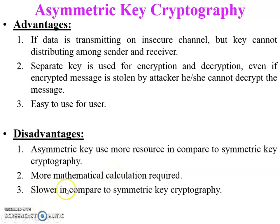Famous examples of asymmetric key cryptography are the RSA algorithm (Rivest, Shamir, and Adleman) and the Diffie-Hellman key exchange algorithm.